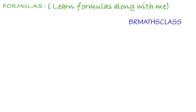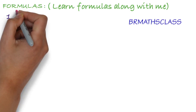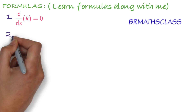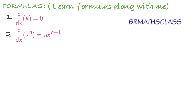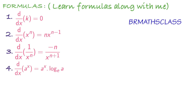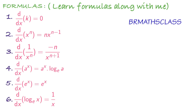What is the first formula that you learned in last class? Derivative of constant is 0. Derivative of x power n is n into x power n minus 1. Third formula: derivative of 1 by x power n is minus n divided by x power n plus 1. Derivative of a power x is a power x into log a base e. Derivative of e power x is e power x. Derivative of log x base e is 1 by x.